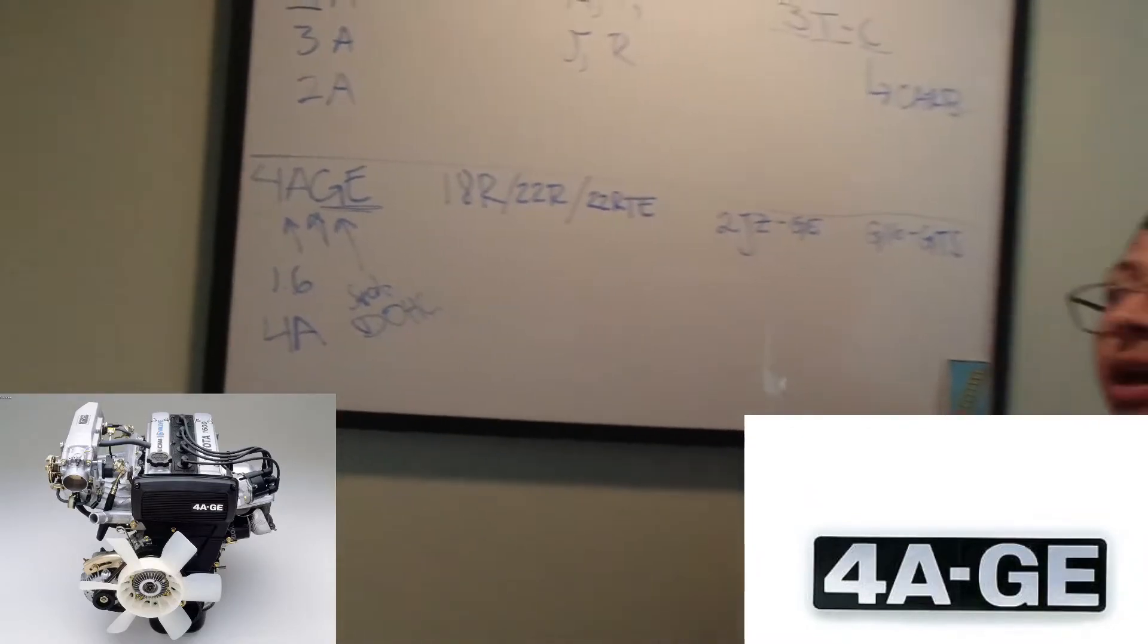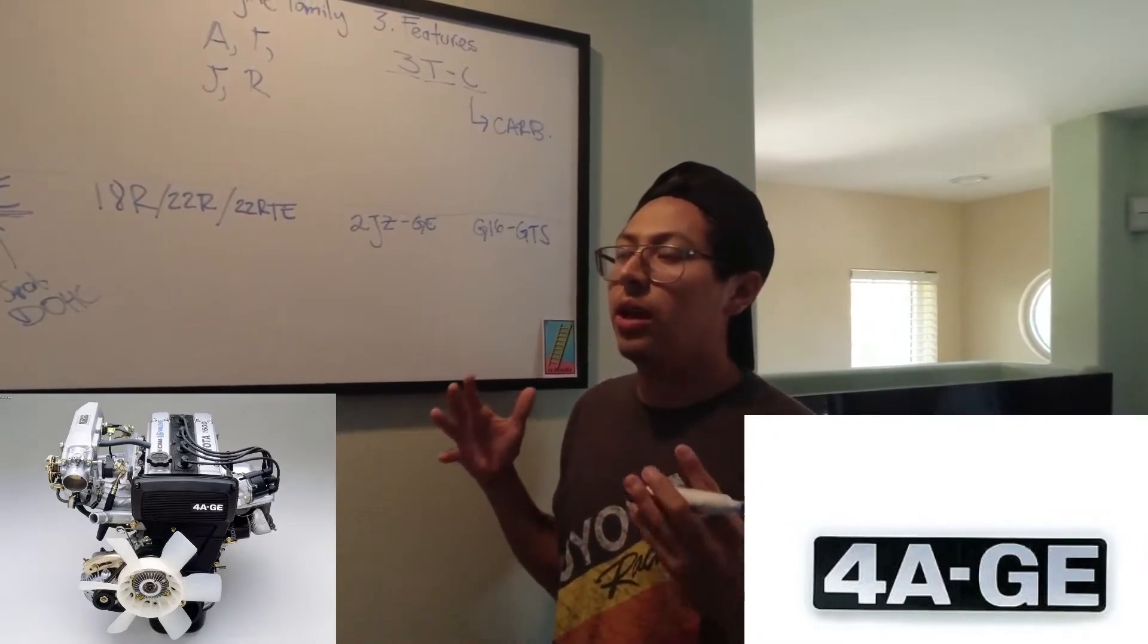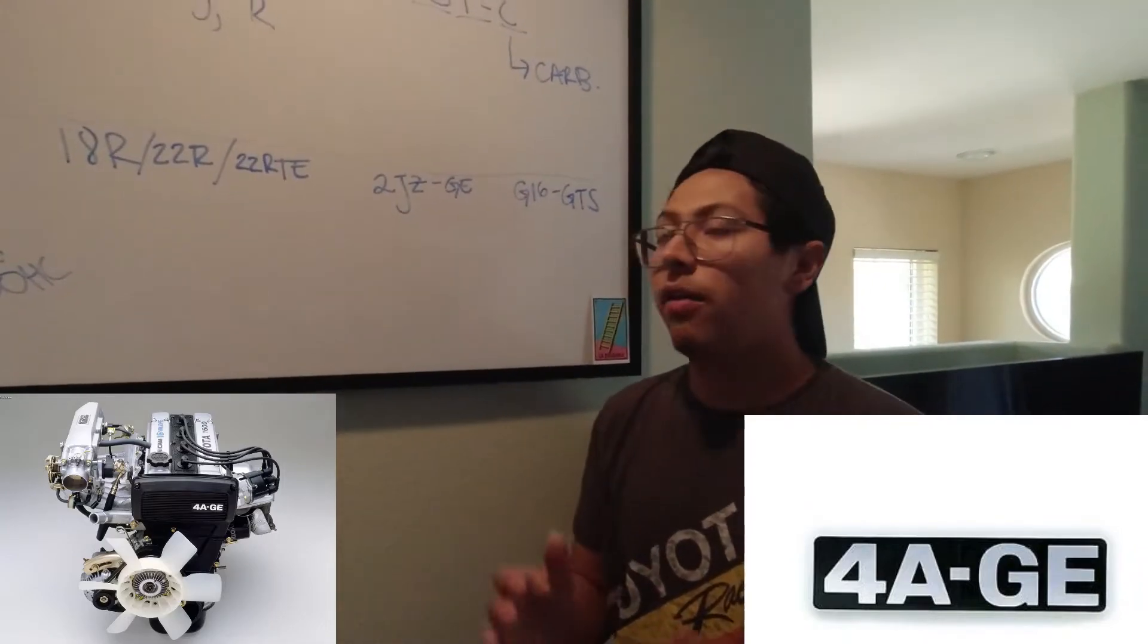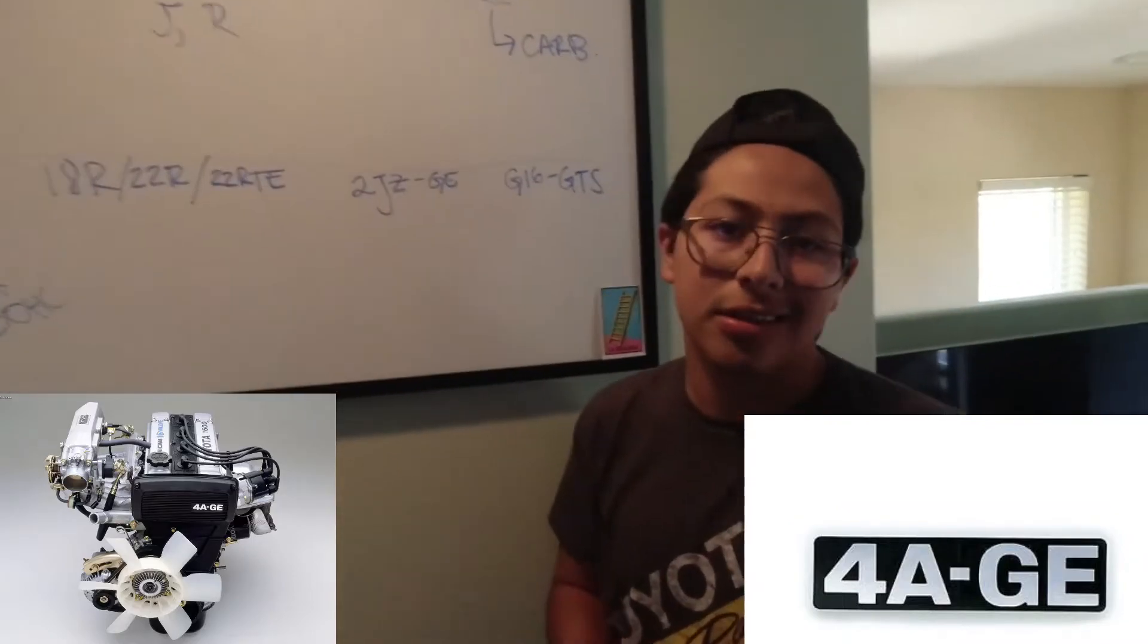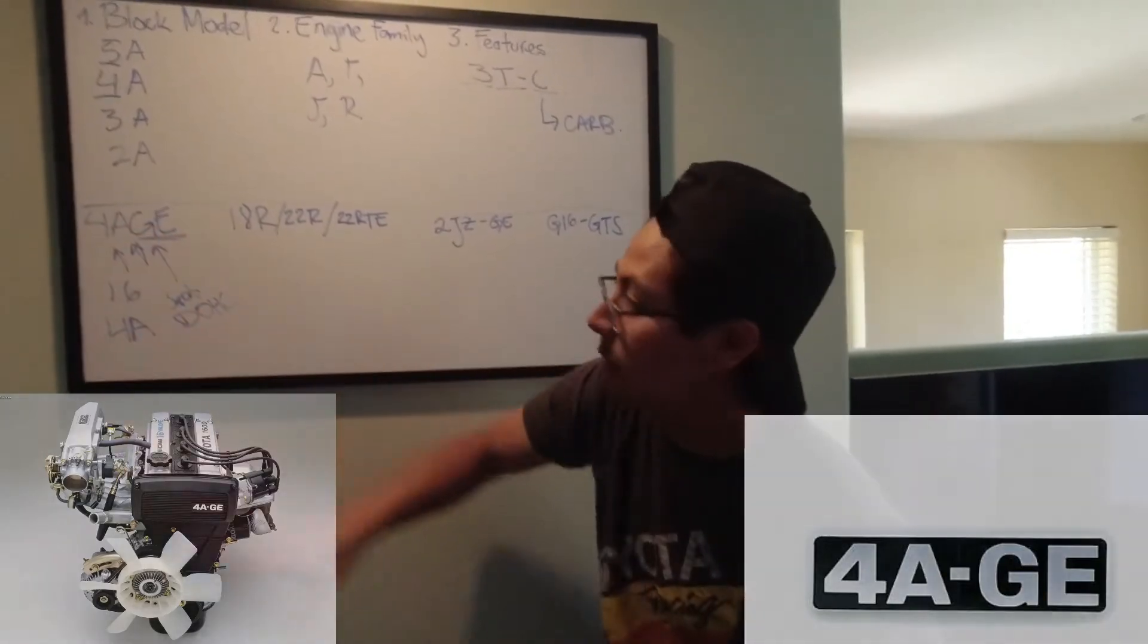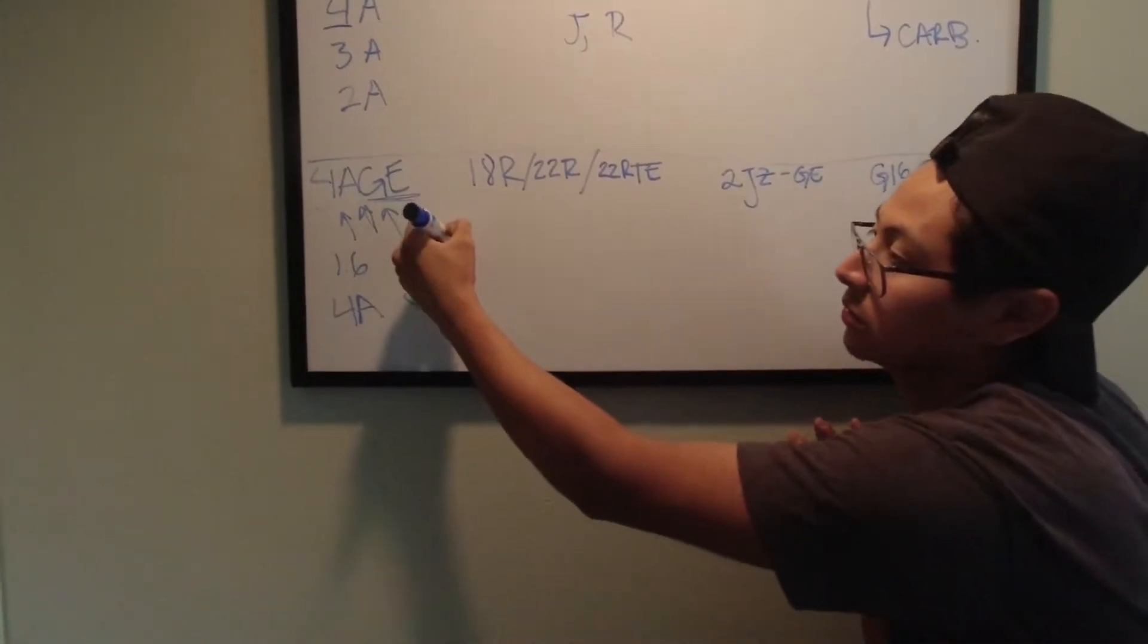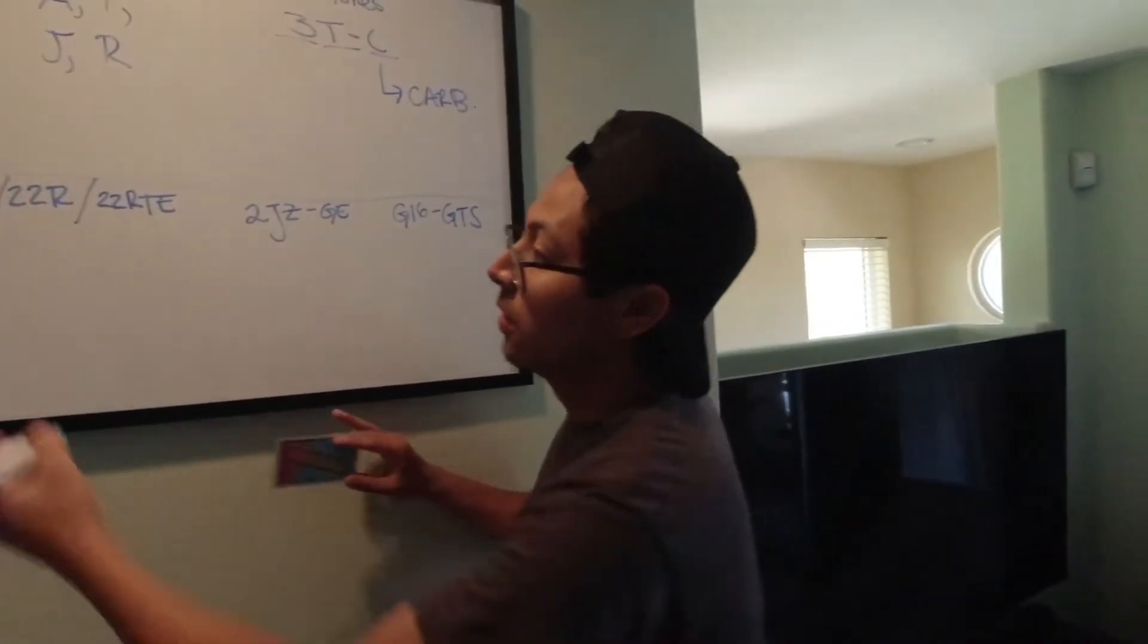For example, an AE86 that is a GTS comes with a 4AGE, and an AE86 that's not a GTS, like those SR5s that we see going for $40,000, which is ridiculous, they will have an engine called a 4AC. Or in other models, there's a 4AFE and other combinations, but that is what makes it so valuable. And then the E will be another feature that is fuel injected. So, fuel injection will be equivalent to having that E.